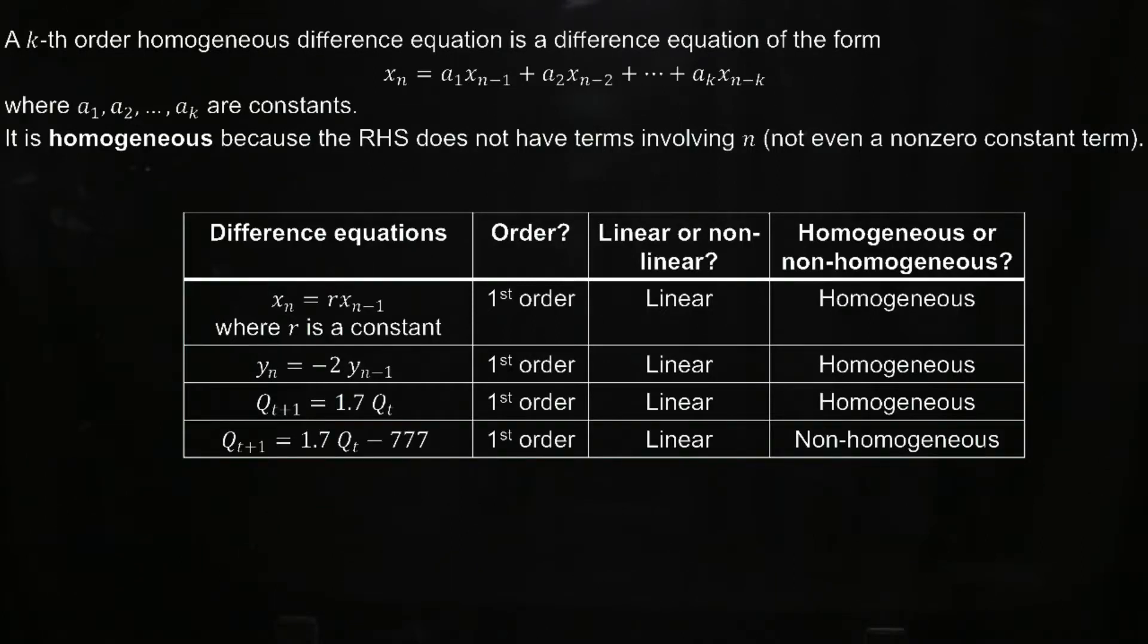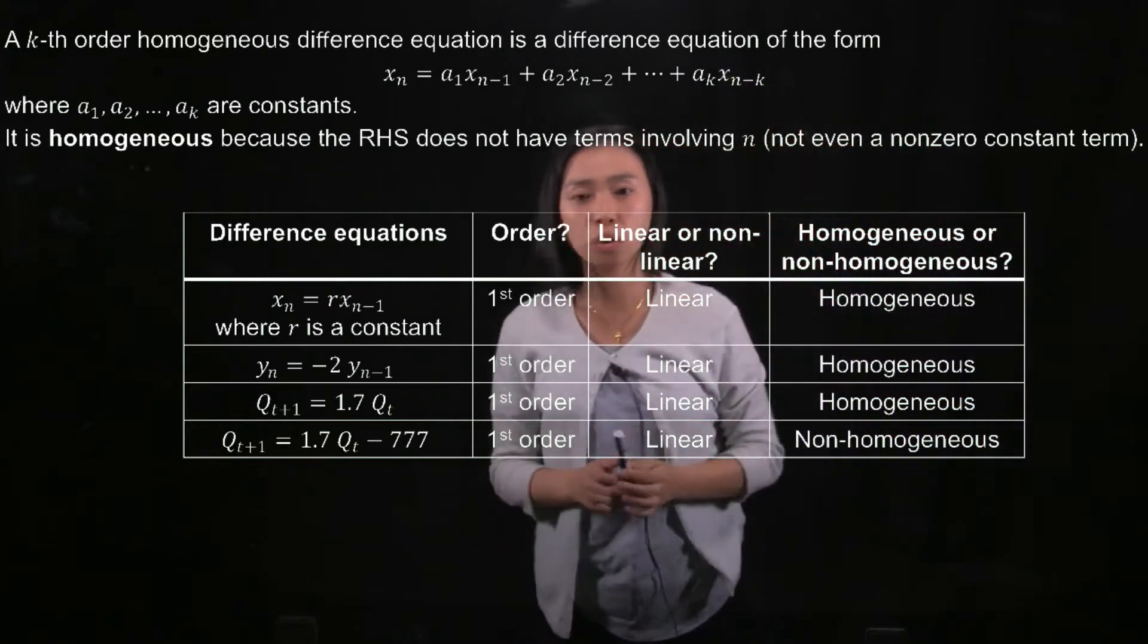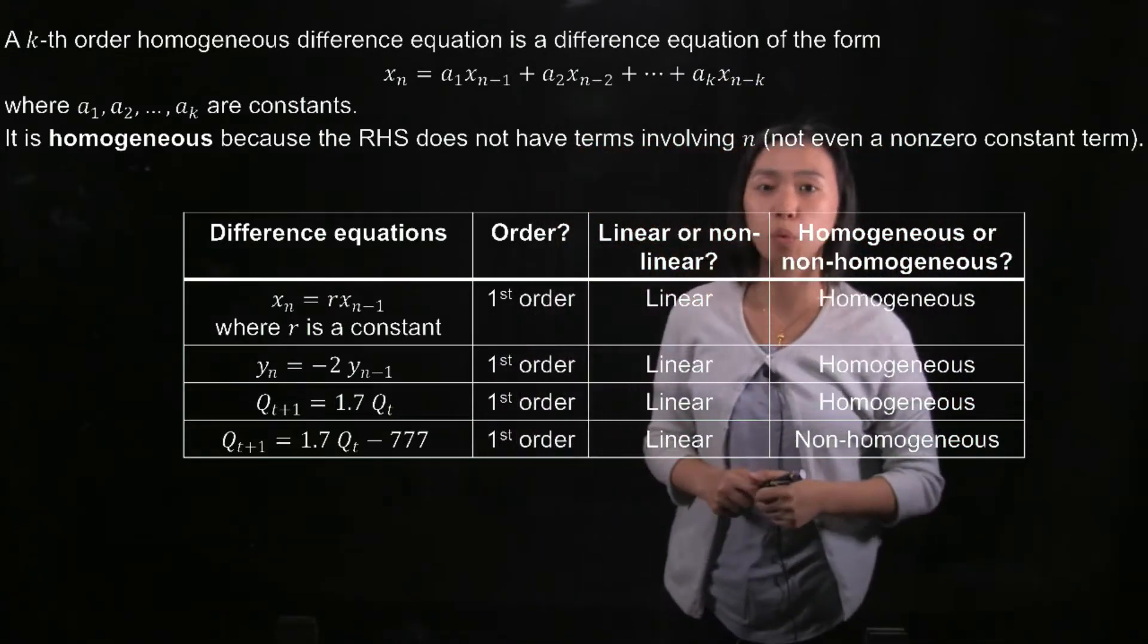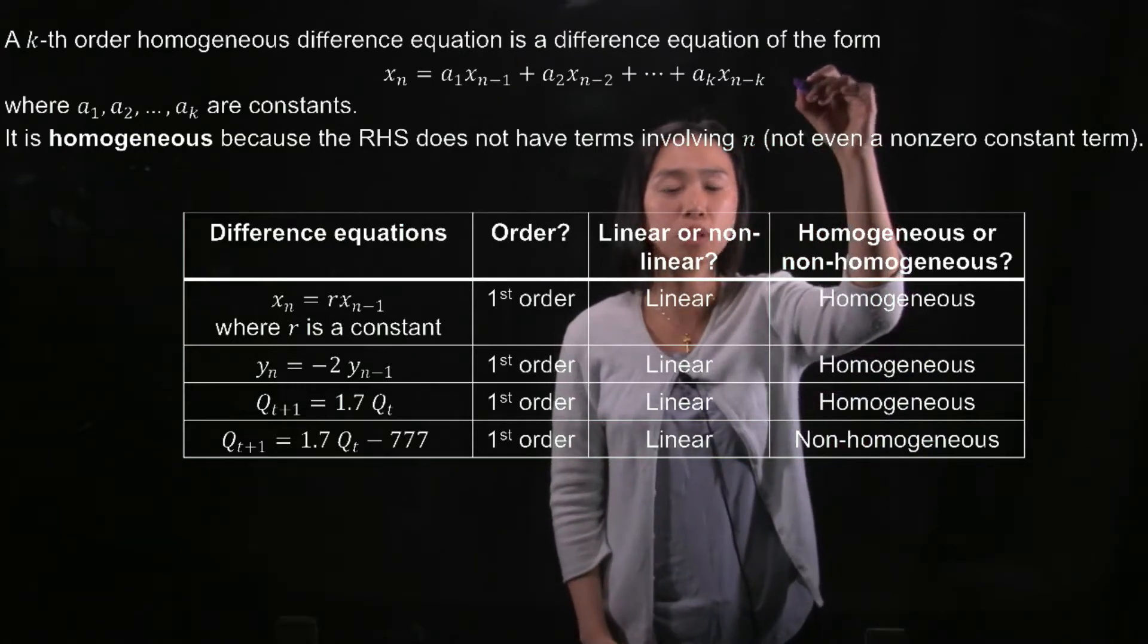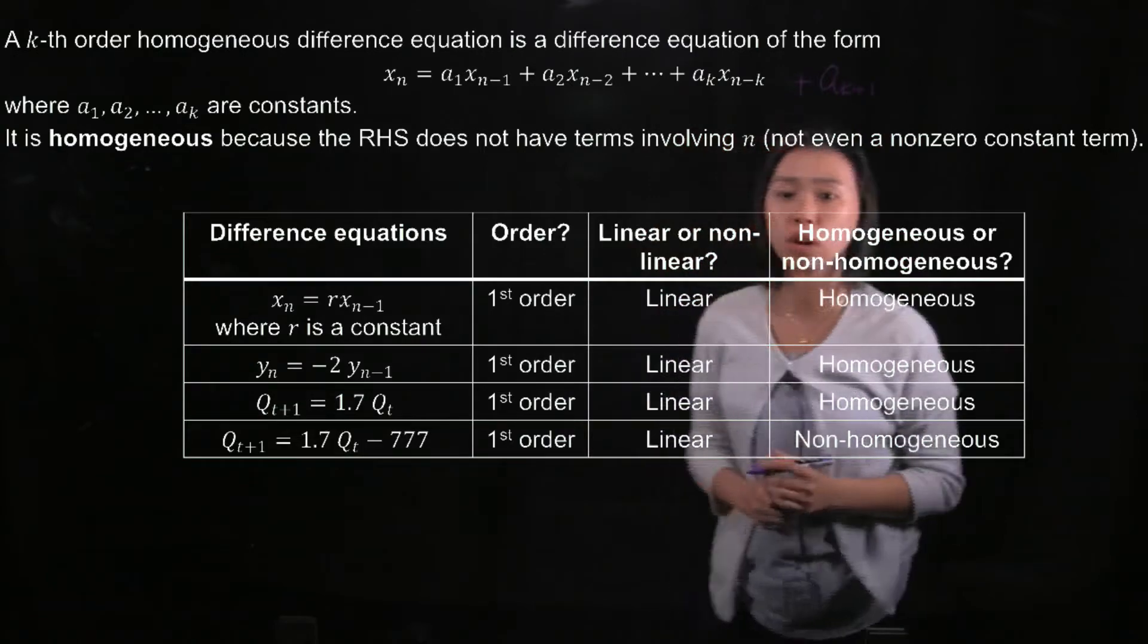A k-th order homogeneous difference equation is a difference equation of this form. It looks similar to the one in the previous videos, but the one in the previous video has an extra term here, an extra constant here.